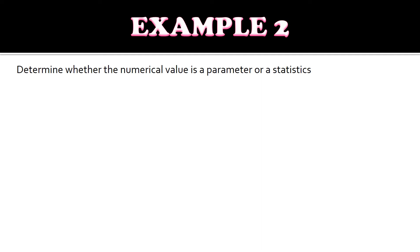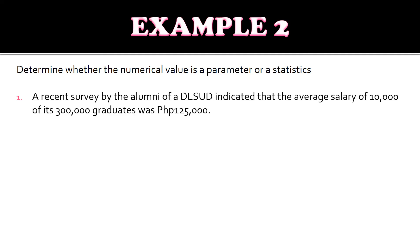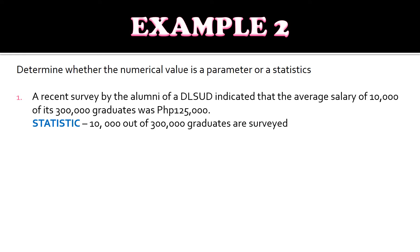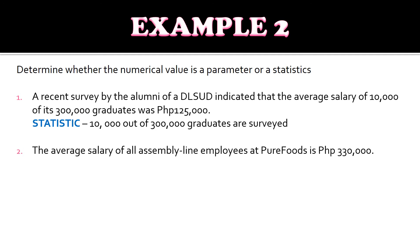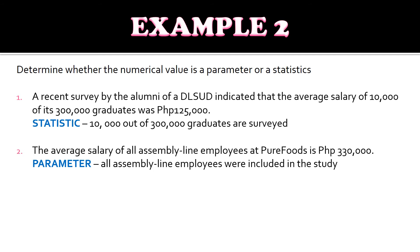Next, we have examples to better understand the difference between parameter and statistics. Number one: a recent survey by the alumni of De La Salle University Dasmarinas indicated that the average salary of 10,000 of its 300,000 graduates was 125,000 pesos. This would be a statistic, since we are talking about 10,000 out of the 300,000 graduates surveyed. Number two: the average salary of all assembly line employees at Pure Foods is 330,000 pesos. This would be a parameter, as it talks about all assembly line employees.